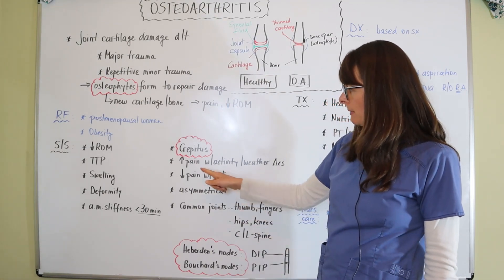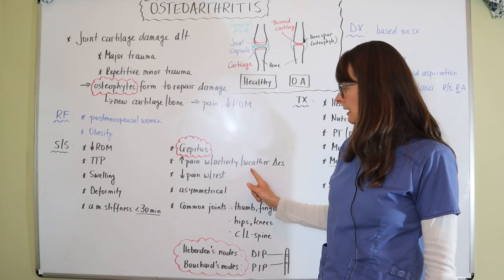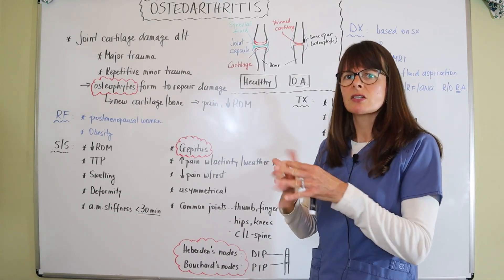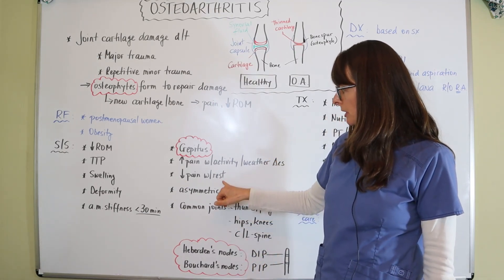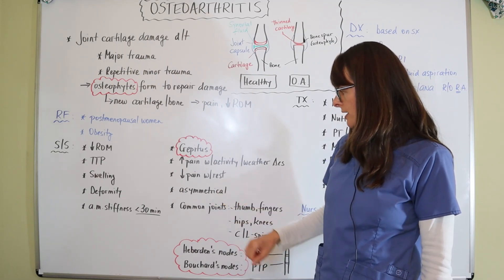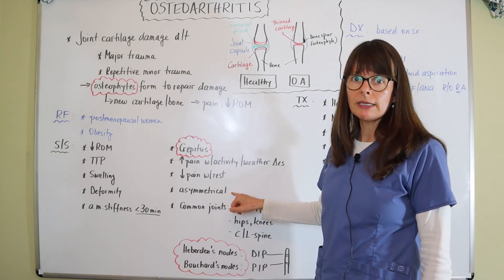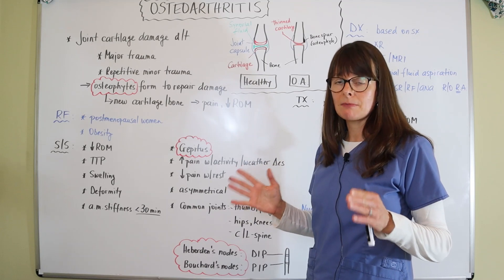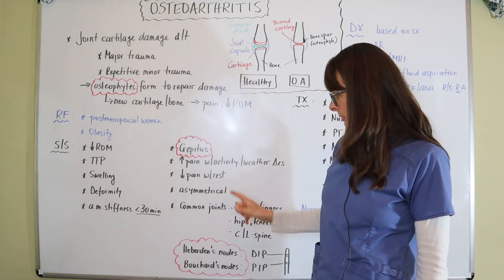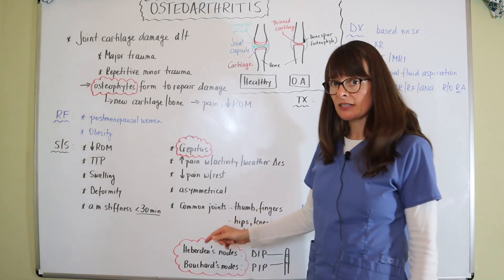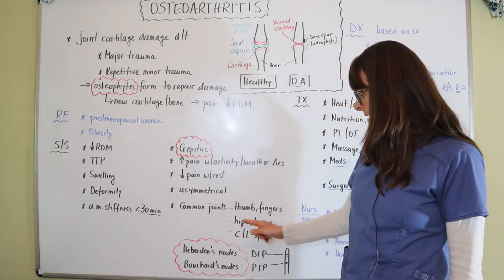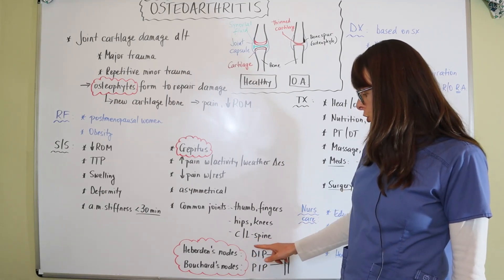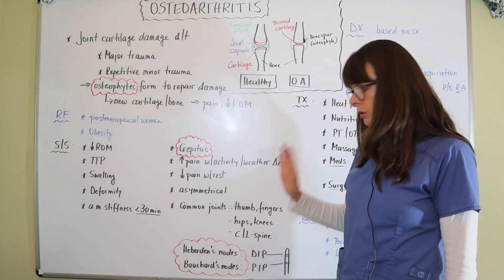Patients often have increased pain with activity and weather changes — this is when someone says their joints are starting to ache when the weather's about to change. Pain typically decreases with rest. Symptoms occur asymmetrically — it can be the right finger and the left toe — whereas in rheumatoid arthritis they're typically symmetrical, with the same joints affected on each side. Common joints affected are the thumbs and fingers, hips and knees, and the cervical and lumbar spine.